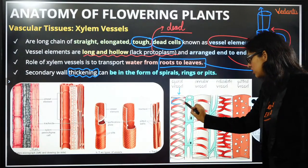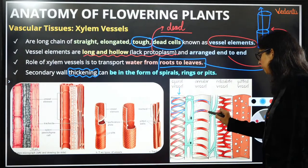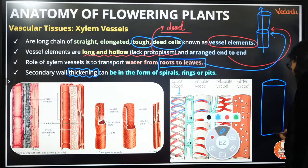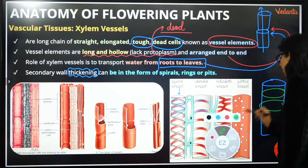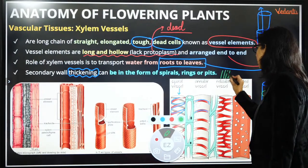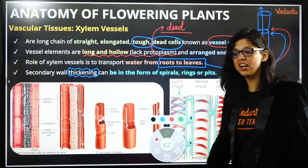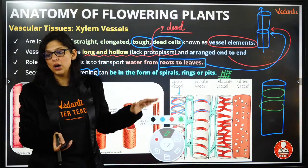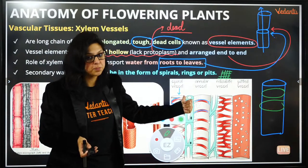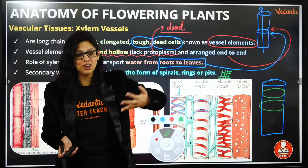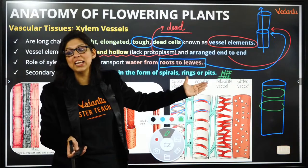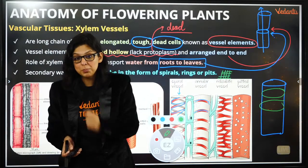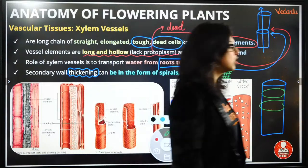The lignin thickening can be in spiral form, it can be in rings (annular form), or it can be reticulate — meaning mesh-like or jaali-like — or it can be in the form of pits but without bordered pits at the end. The strength comes from lignin which can be in the form of spirals, annular rings, reticulate pattern, or pits. Xylem vessels are hollow in the middle and when stacked are referred to as a synsite.